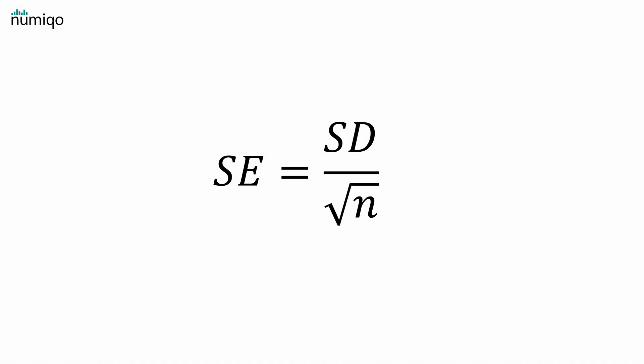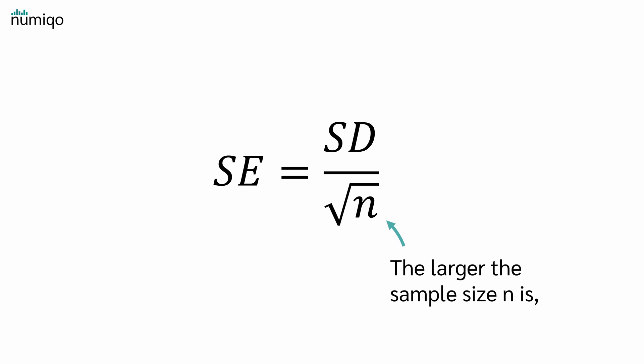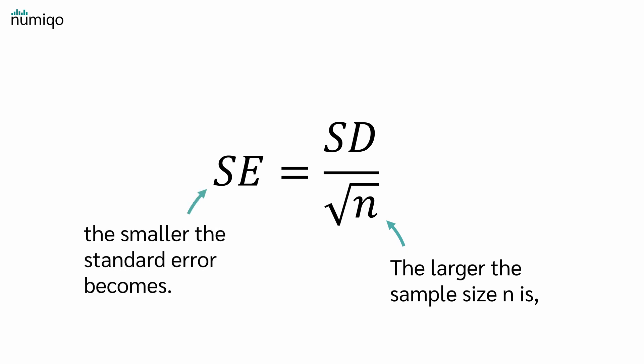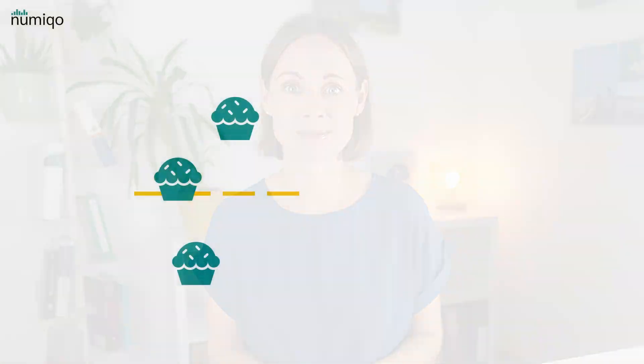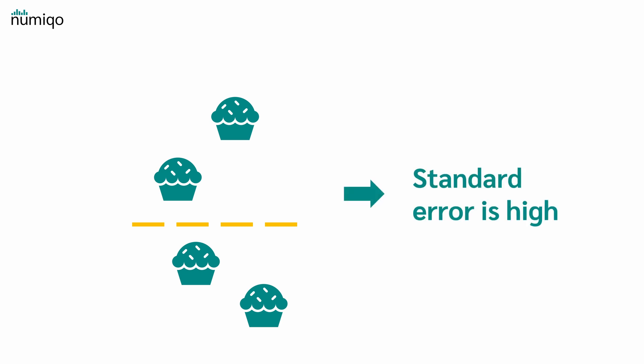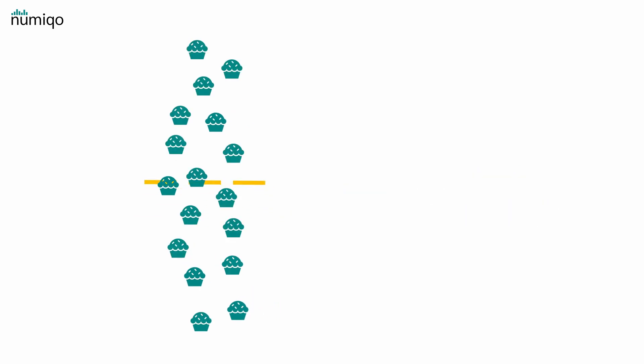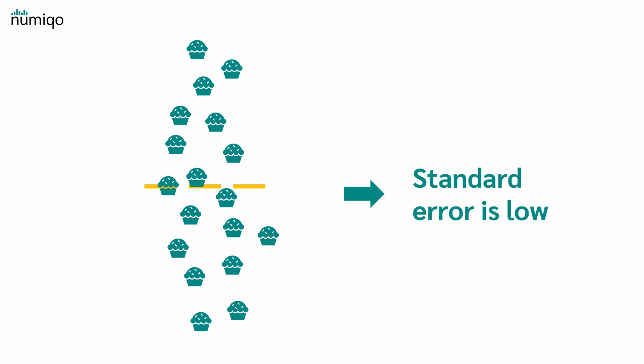There are two more important things to consider. If we look at the standard error formula again, we see that the sample size n plays an important role. The larger the sample size n is, the smaller the standard error becomes. Bigger samples give us more precise estimates of the population. So with a small sample, say 3 muffins, the sample mean is shaky — each new muffin can change the mean noticeably, and therefore the standard error is high. With a large sample, the sample mean stays close to the true population mean, and therefore the standard error is low.